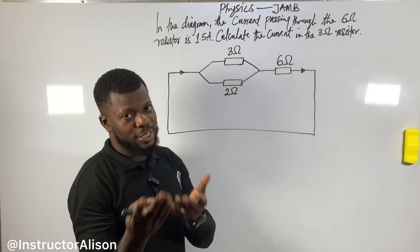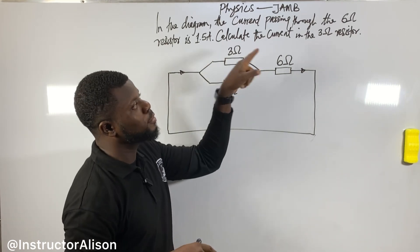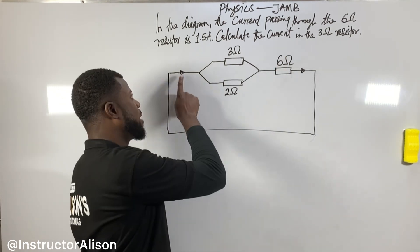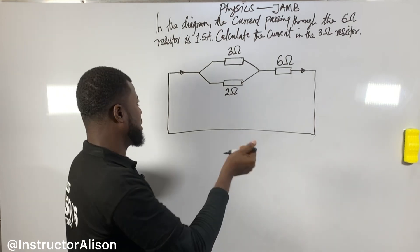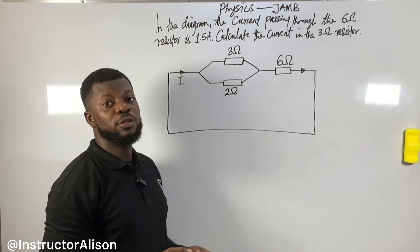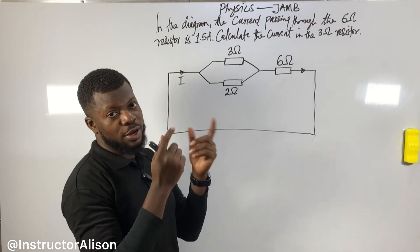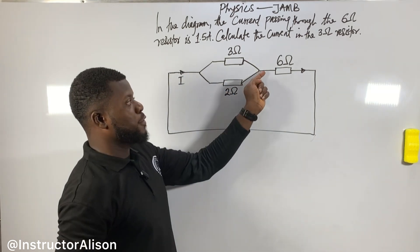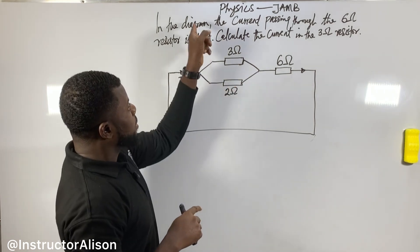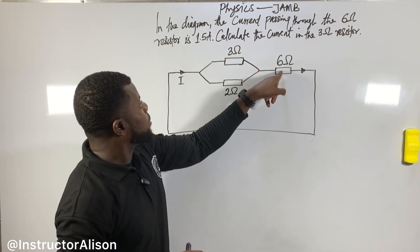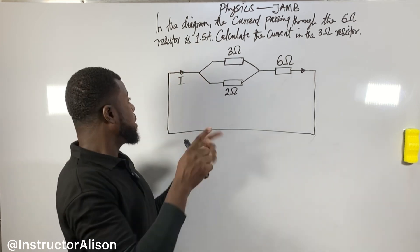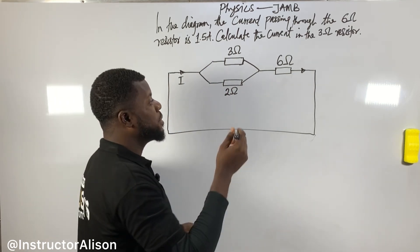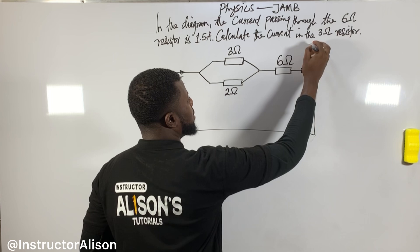Look at the diagram here. See the current passing through the six ohm resistor. The arrow in the diagram represents current — the direction the current flows. The question states that the current passing through the six ohm resistor is 1.5 amperes. The SI unit for current is the ampere, sometimes spelled 'ampere'.